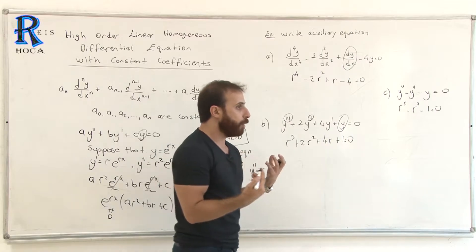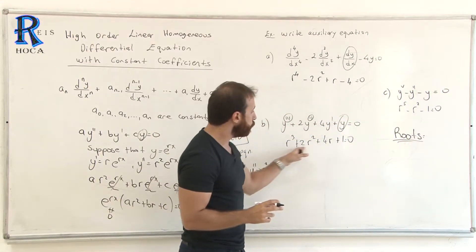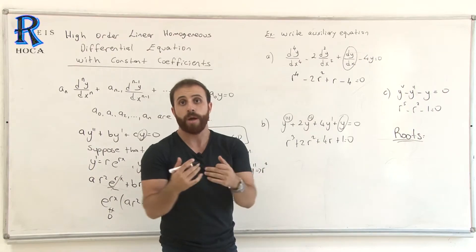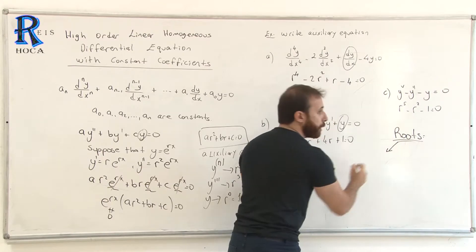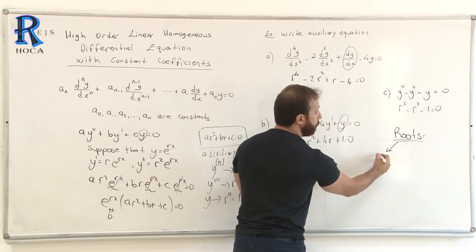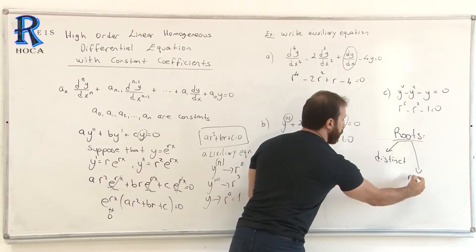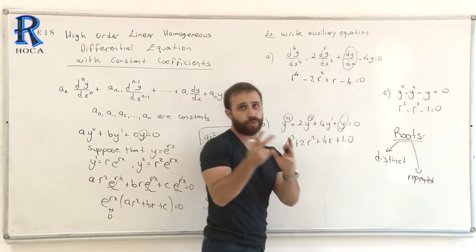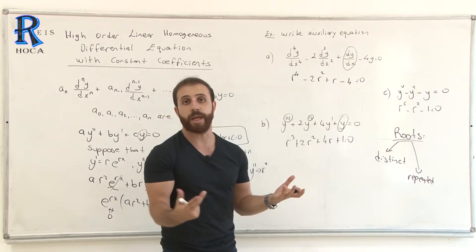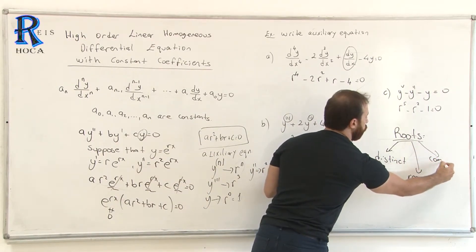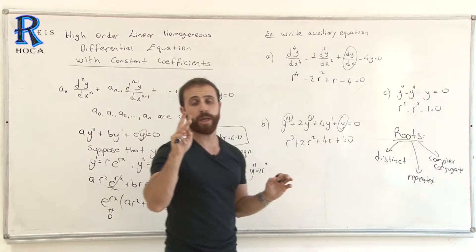Our aim is to find the roots of the auxiliary equation by solving it. After finding the roots, there are three possibilities: the roots could be distinct (different real numbers, e.g., 3 and 5), repeated (same root, e.g., 5 and 5), or complex conjugate roots.